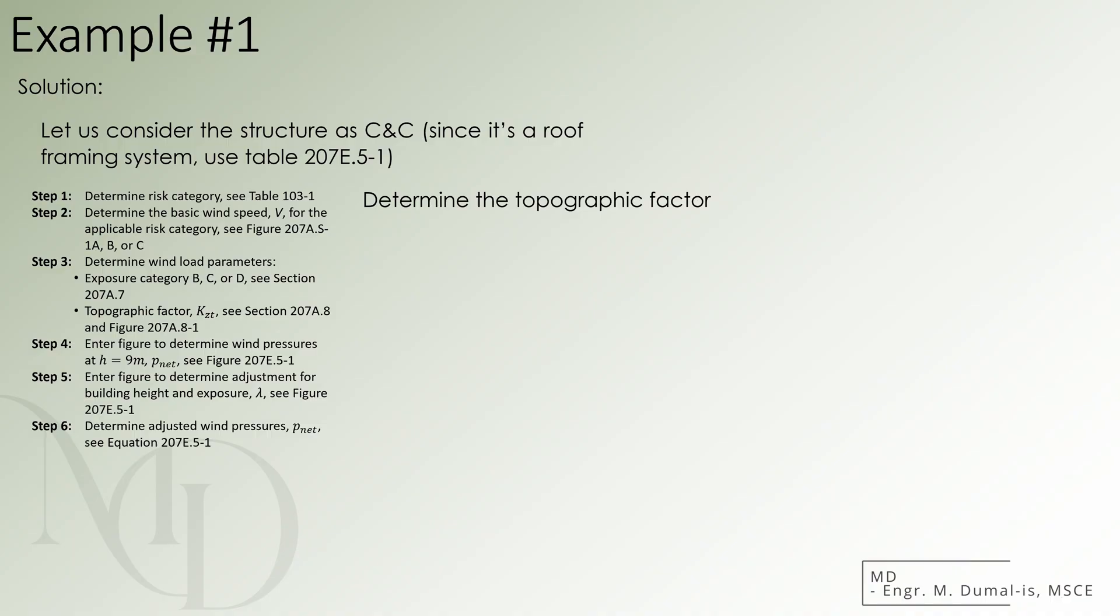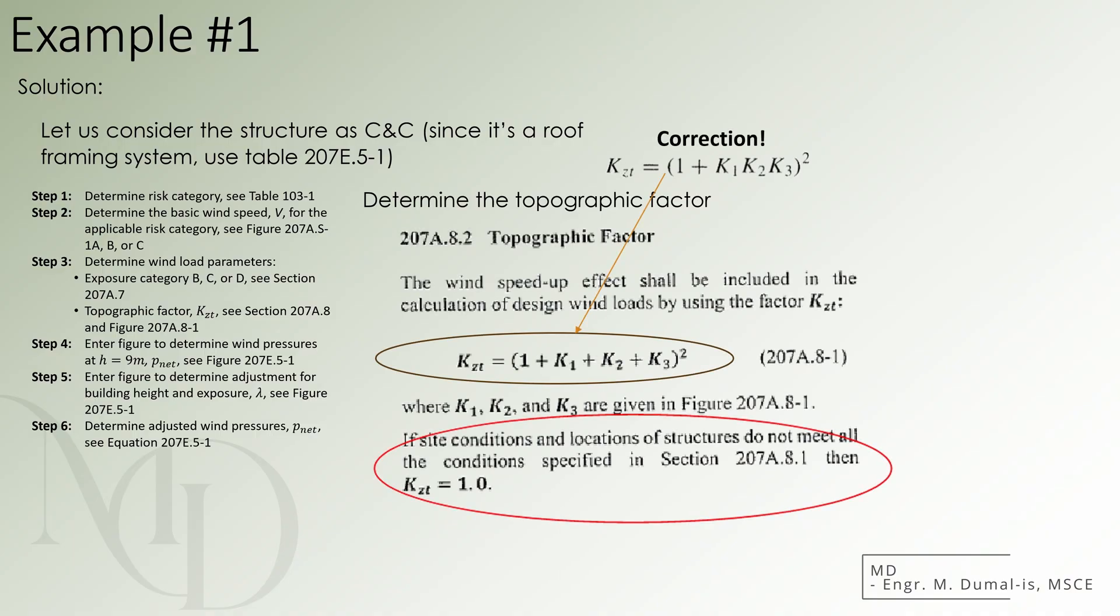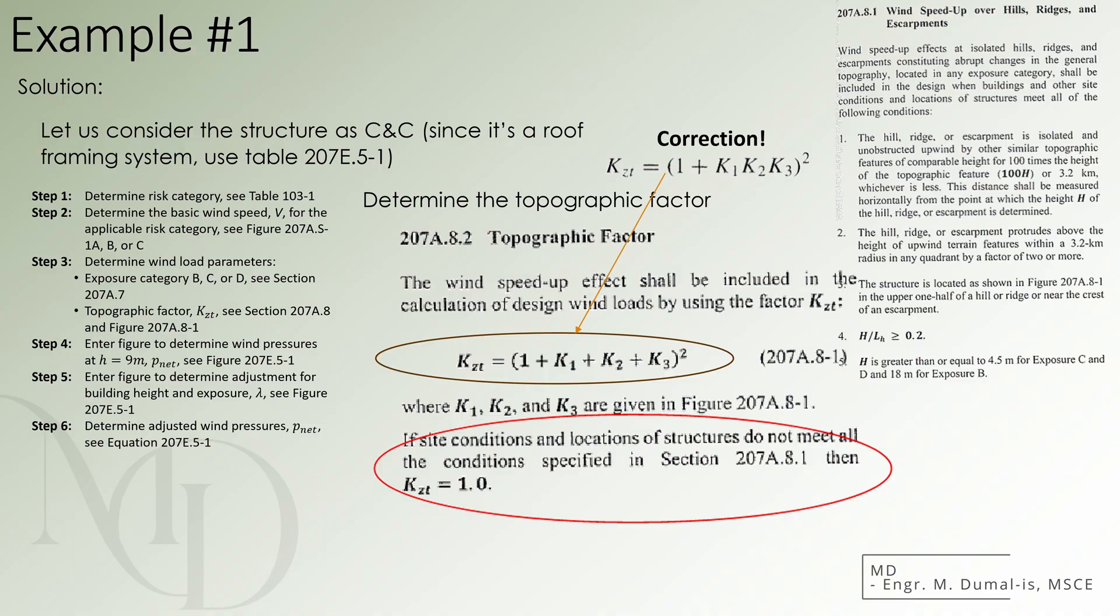Now that we are done with the exposure and occupancy category and wind speed, let us now identify or solve for the topographic factor. Topographic factor, represented by kzat, is computed by the square of the quantity, 1 plus the product of k1, 2, and 3. Be aware that there are some typographical errors in the NSCP version, so we must refer to the source, which is ASCE 7 provision. However, it must also be noted that under A.8.1, kzat can also be taken as 1. If any of those five provisions were not satisfied, this would mean that in Baguio, kzat can be considered as 1.